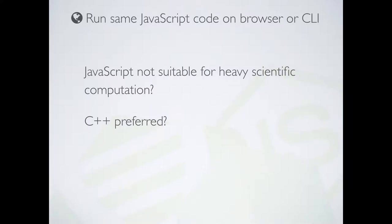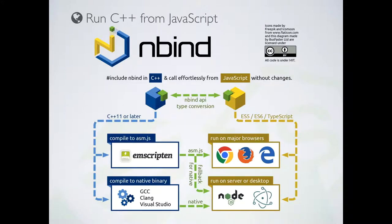People might say JavaScript is not the best language for highly intensive scientific computation — what about C++ or something like that? The cool thing is you can combine C++ very nicely with JavaScript. You can run C code in the Google V8 engine inside Node, or transcribe it to JavaScript and run it in the browser. There are projects that allow you to combine C and JavaScript, so you can really build cross-platform software. It's a very nice ecosystem to work in.